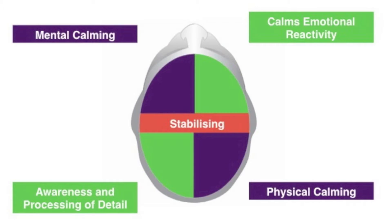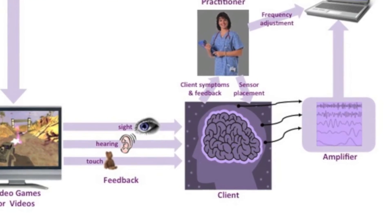With neurofeedback, we focus on areas of the brain to restore and improve brain regulation and teach the brain how to work better. We always start by discussing your symptoms, because these symptoms will tell us something about what kind of deregulation occurs and in which areas of the brain this deregulation exists. By placing electrodes on these specific areas,